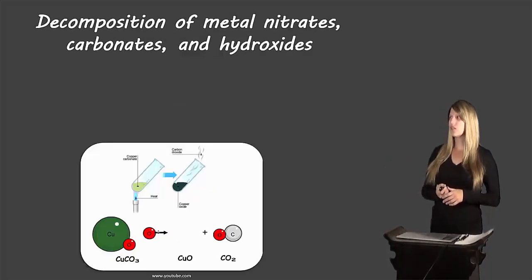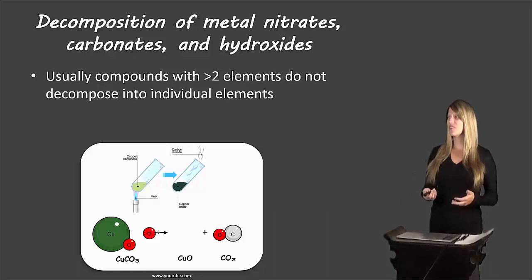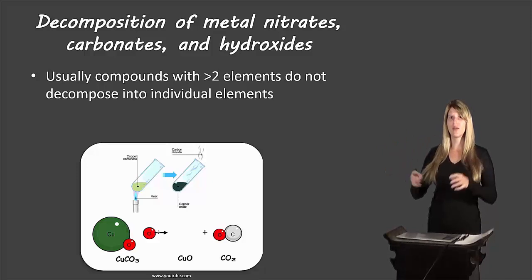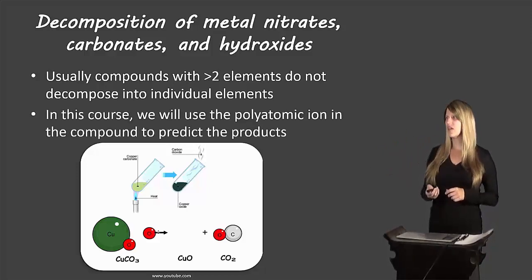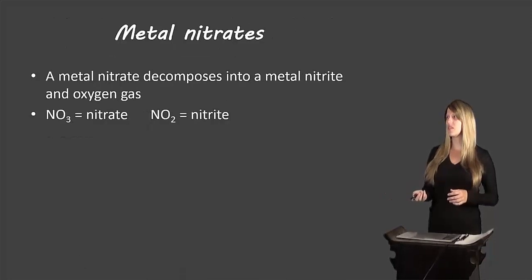Now let's look at the decomposition of metal nitrates, carbonates, and hydroxides. Normally, if there are more than two elements, they don't decompose into three or four separate elements — they usually decompose into groups of smaller compounds. We're going to look at polyatomic ions to help us determine what's being broken down into which pieces.